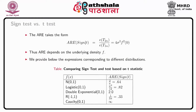Finally, we can compare different pairs of tests using ARE. Considering the comparison of sign test with respect to the t-test statistic, the ARE is given by 4 sigma squared times f squared at 0. Naturally ARE depends on the underlying density f, and we provide expressions corresponding to different distributions in the table below.